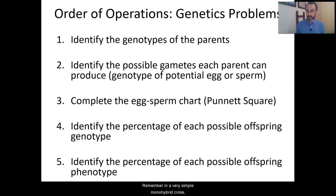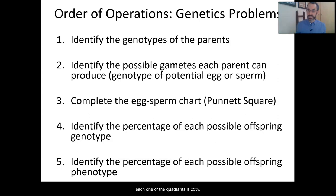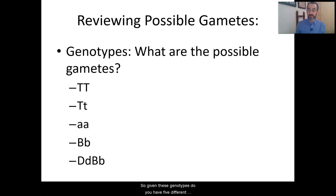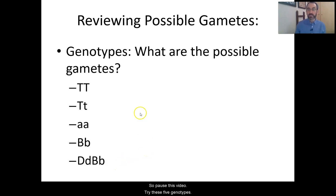Remember in a simple monohybrid cross, that's a four-square Punnett square, and each one of the quadrants is 25%. Based upon which allele is dominant and which is recessive, you should also be able to calculate the percentage of each possible offspring phenotype. Given these genotypes — we have five different parents here — what are the possible gametes? Pause this video, try these five genotypes, and we'll come back and check your answers in a moment.